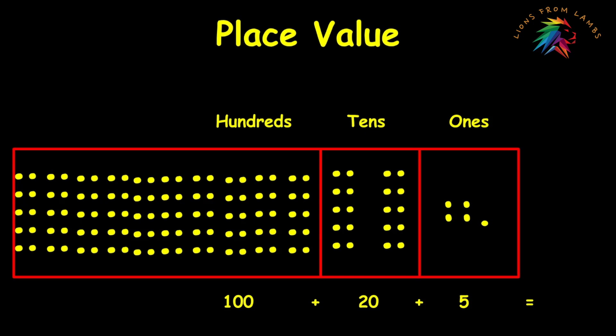Okay. Right now they're expanded. We're going to add those together. 100 plus 20 is 120. And 120 plus five is 125. And that's place value.